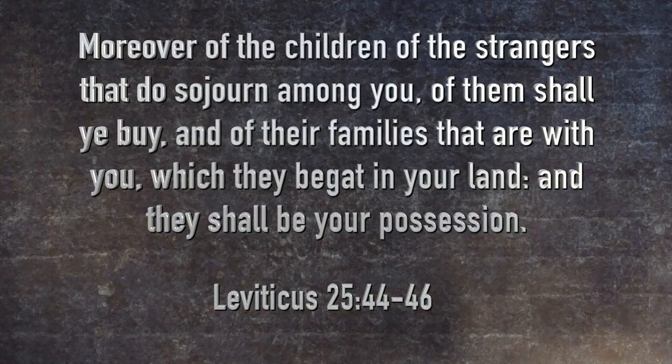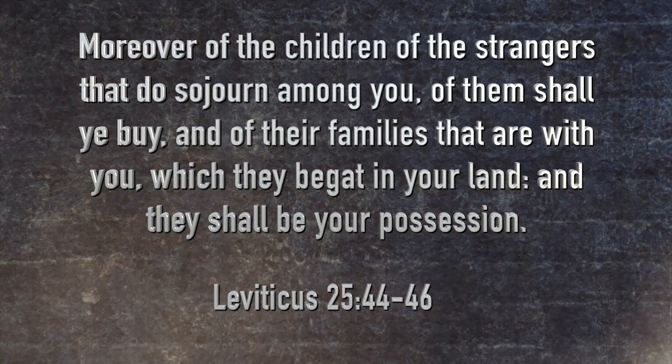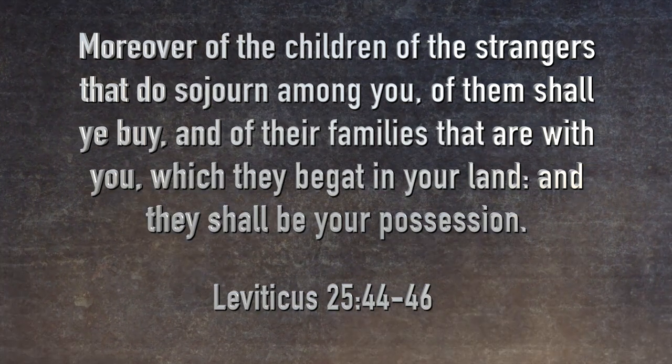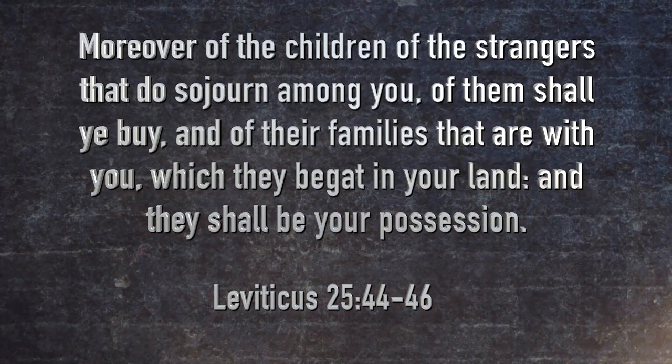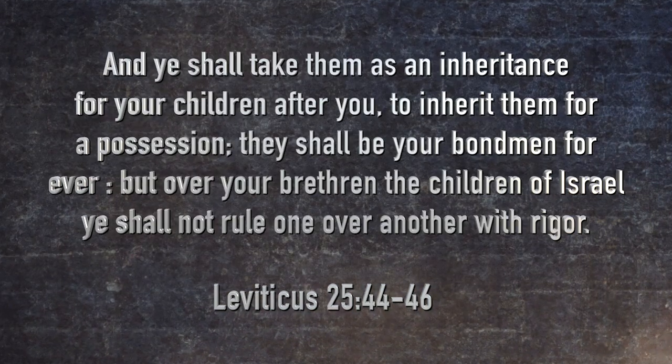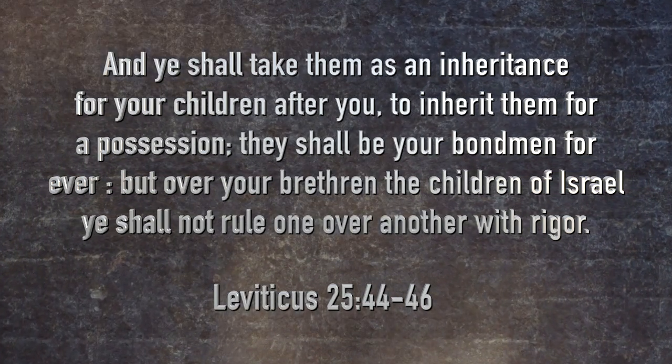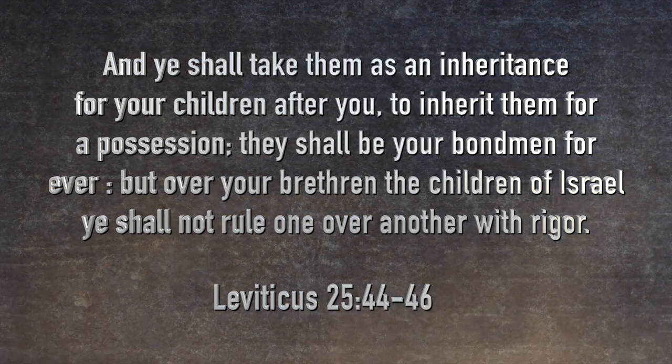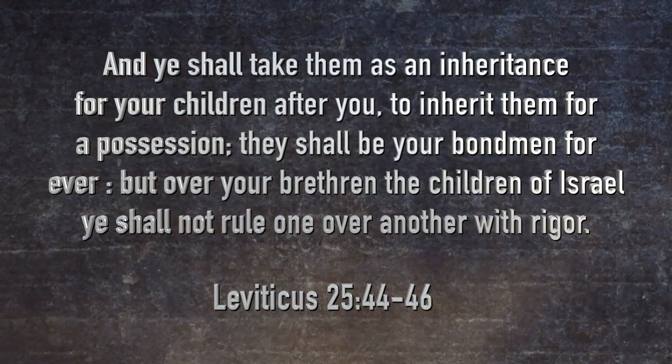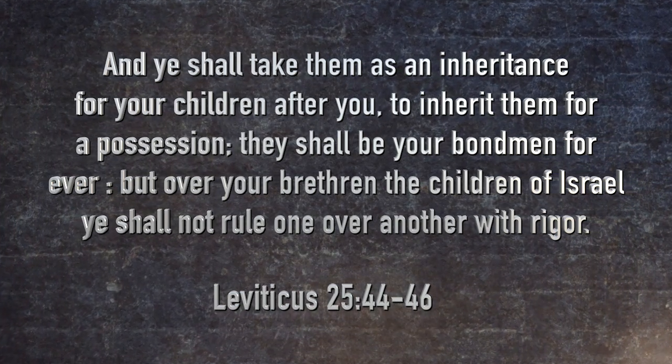Moreover, of the children of the strangers that do sojourn among you, of them shall you buy, and of their families that are with you, which they begat in your land, and they shall be your possession. And you shall take them as an inheritance for your children after you, to inherit them for a possession. They shall be your bondmen forever. But over your brethren, the children of Israel, you shall not rule one over another with rigor. Now what is this saying?